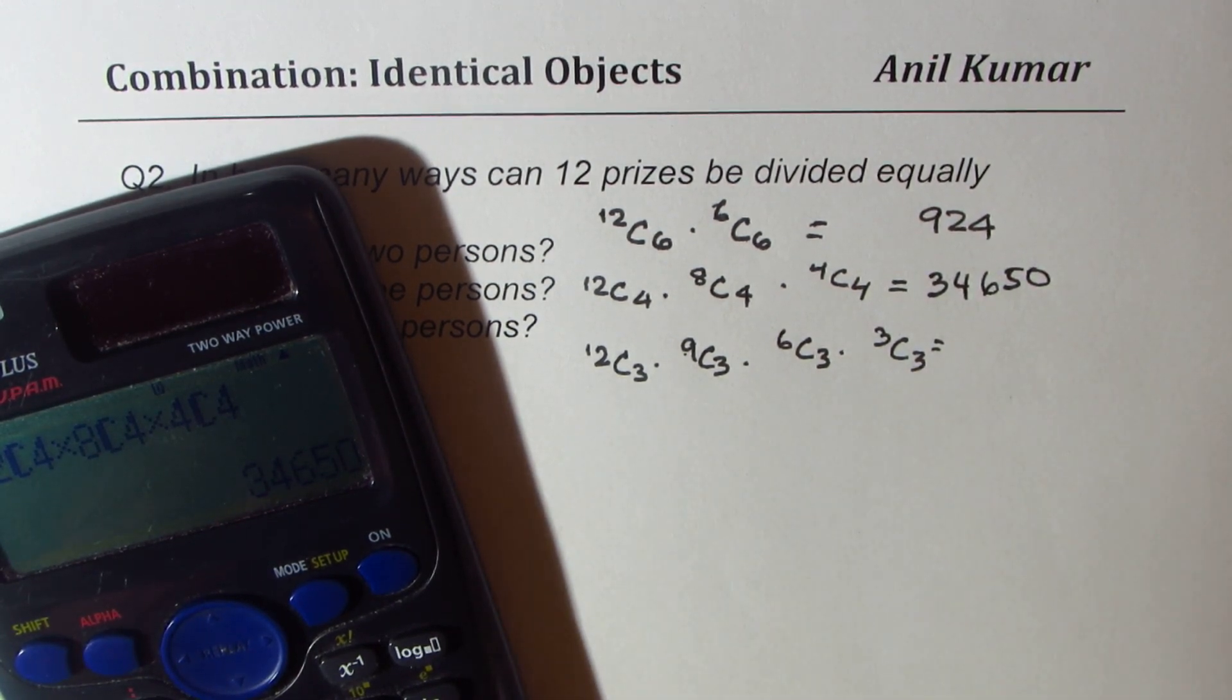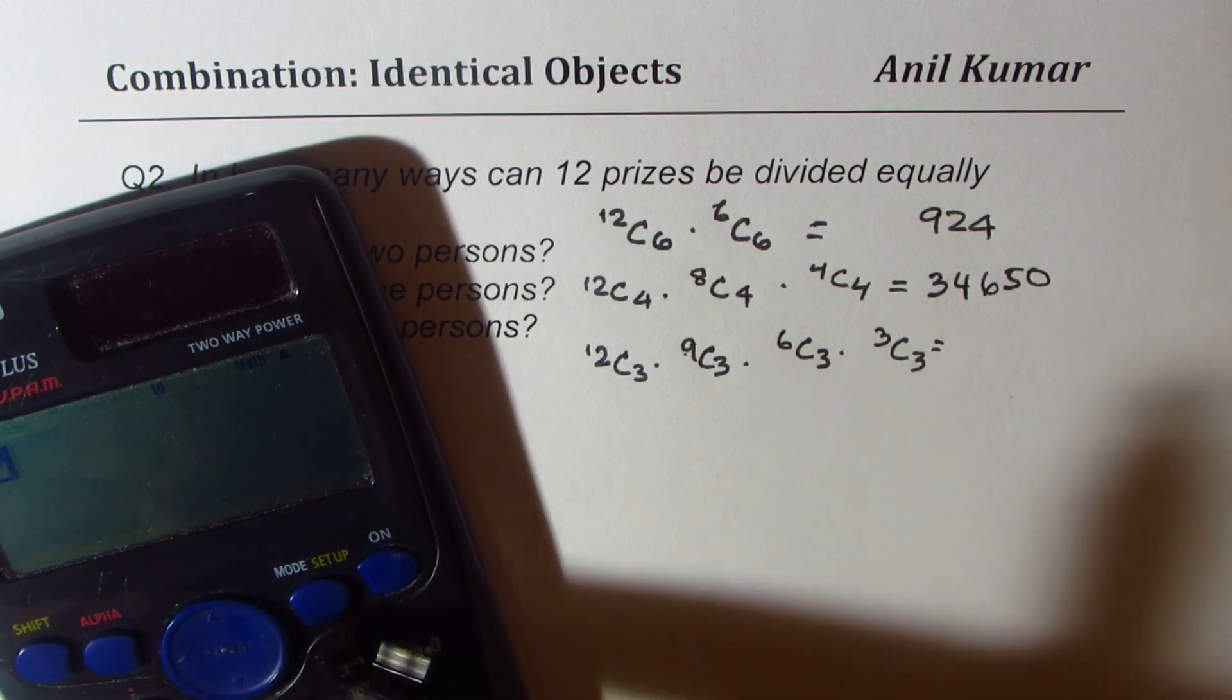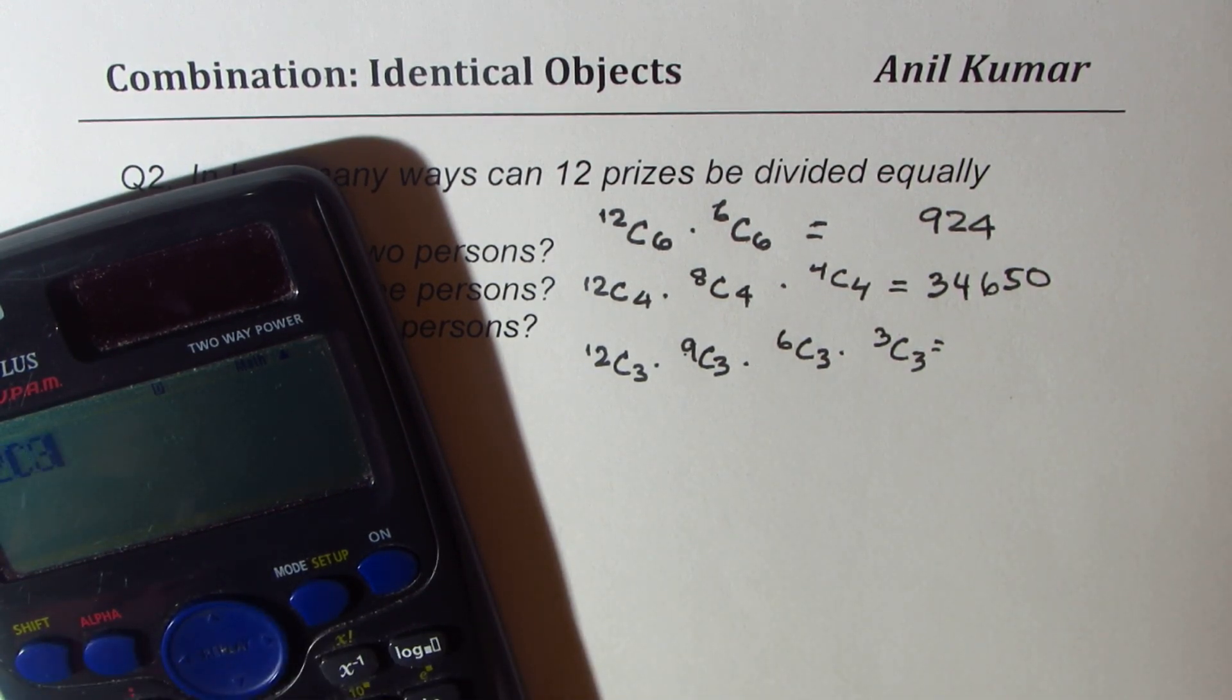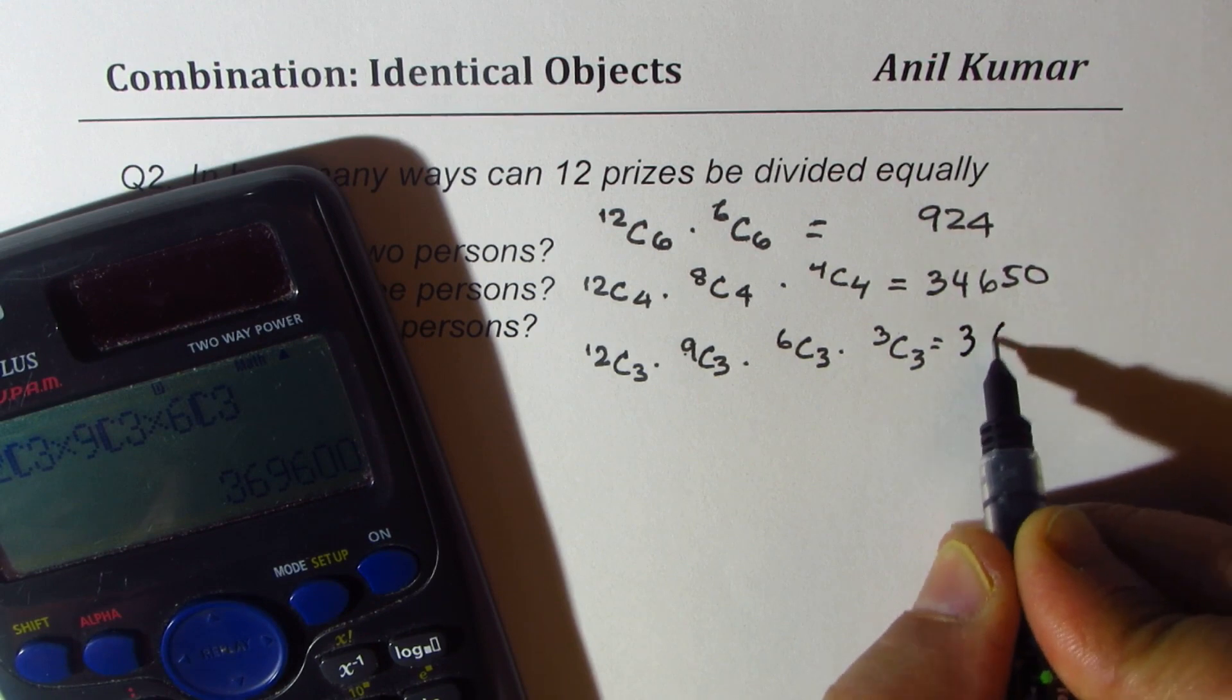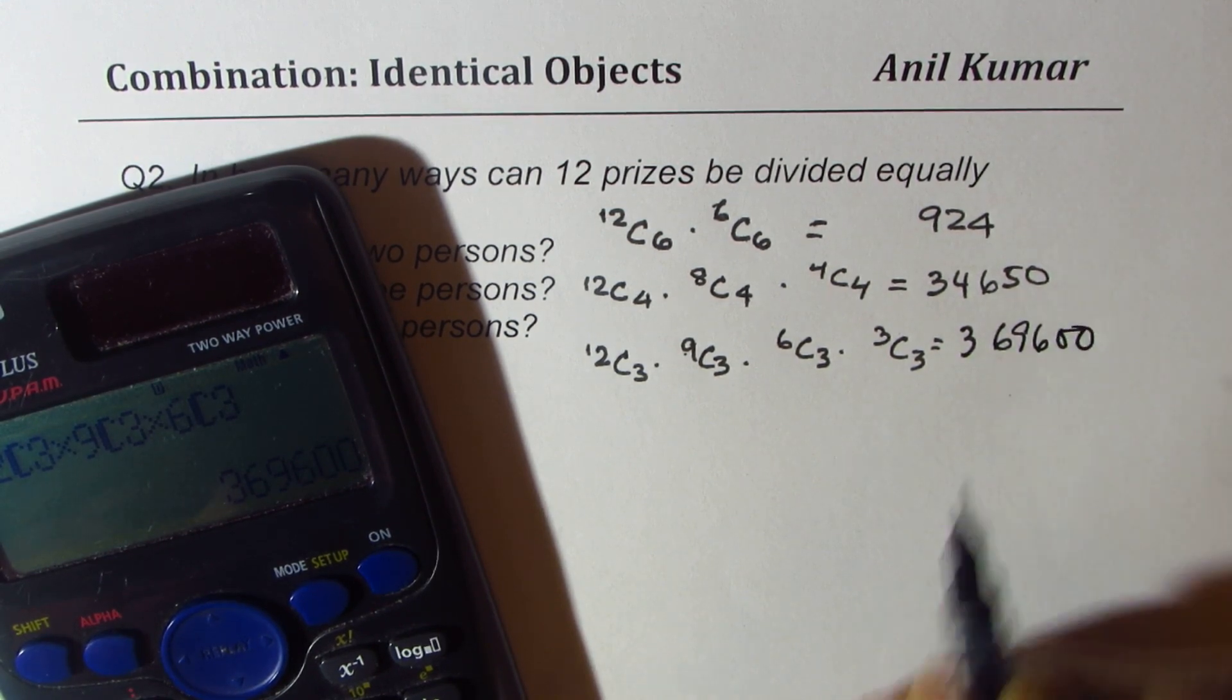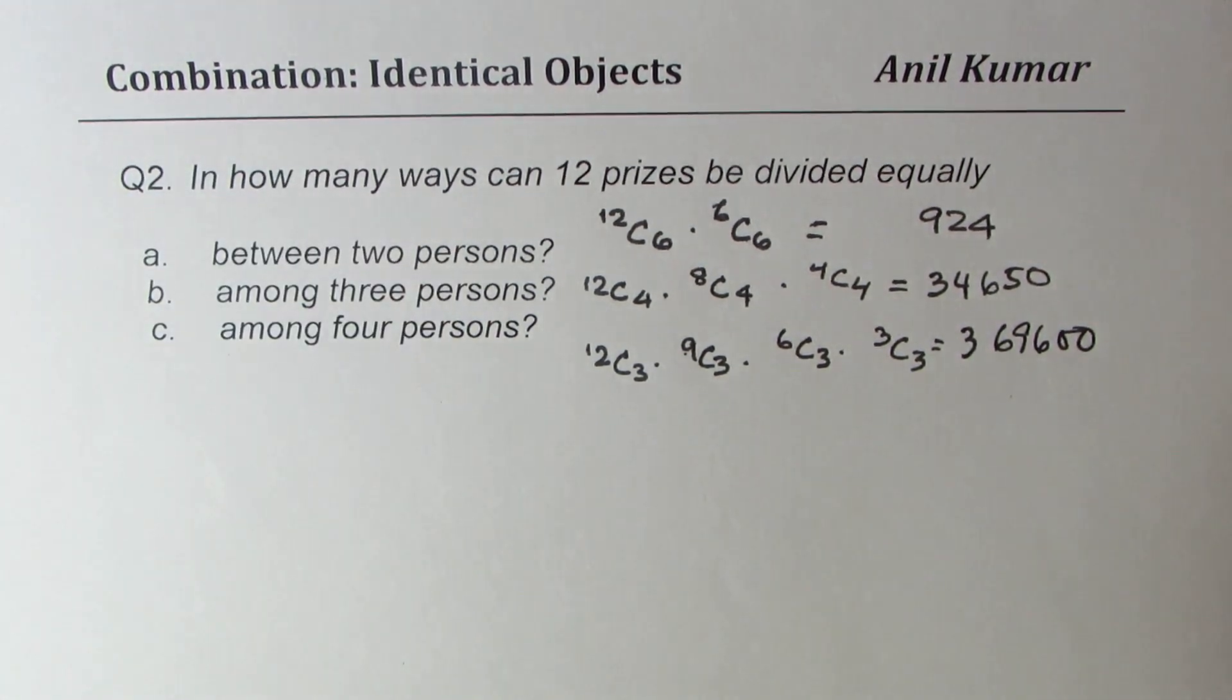And for the last one, we get 12C3 times 9C3 times 6C3 times 3C3 is 1. So we could write this as 369,600.